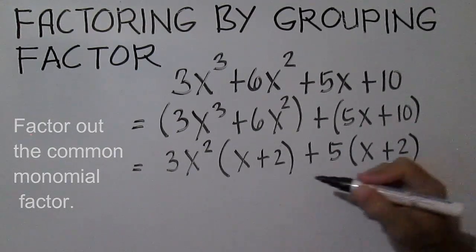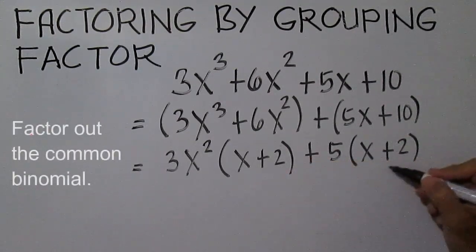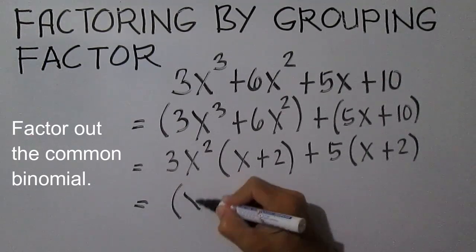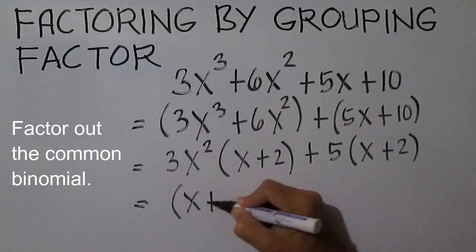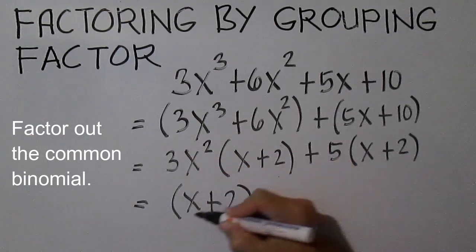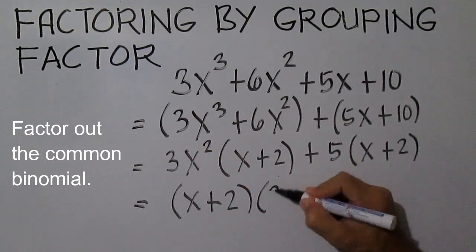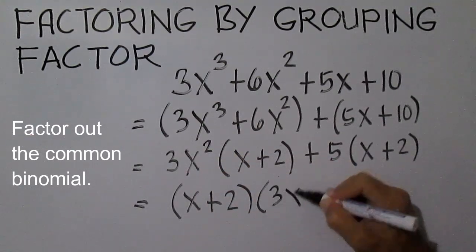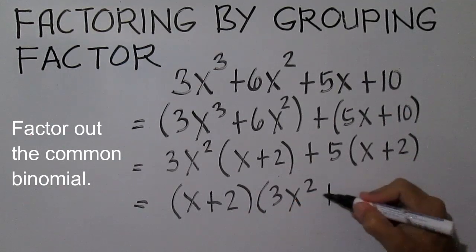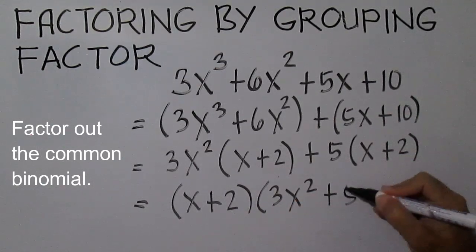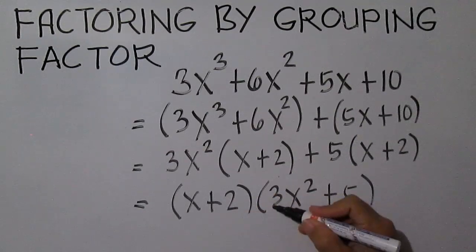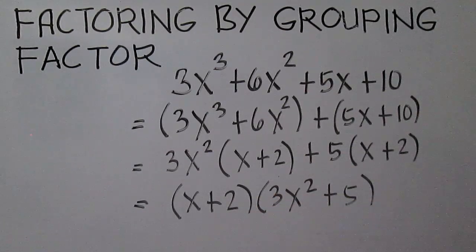Note that we have a common binomial. Factor out the common binomial X plus 2. The other factor is 3X squared plus 5. The factors are X plus 2 and 3X squared plus 5.